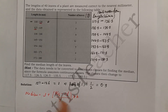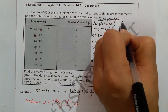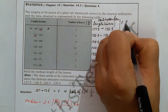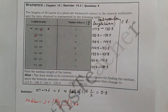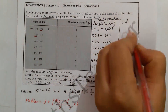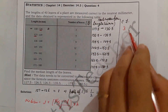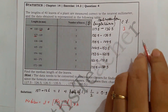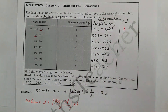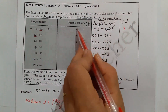To find the median class, we first need to calculate the cumulative frequency (cf). We calculate cf by adding each frequency cumulatively as we go down the table.